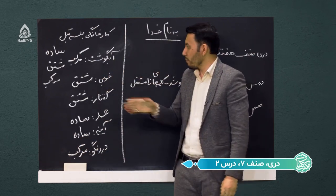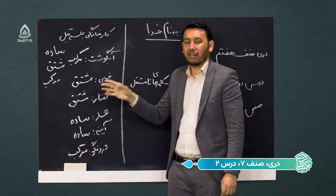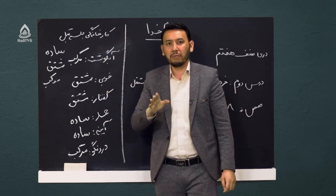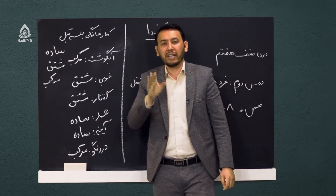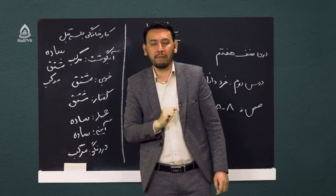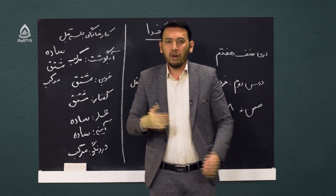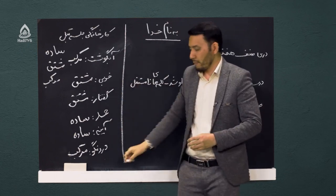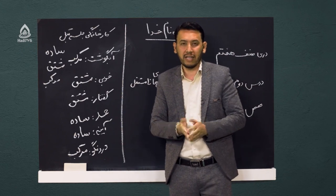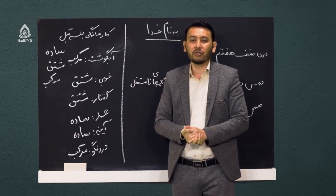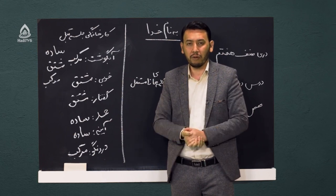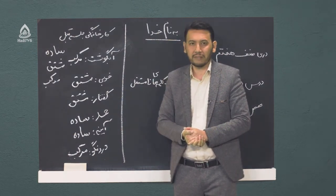پس انواع کلماتی که در کار خانگی جلسه قبل گفتیم در قالب سه نوع کلمه مستقل ساده، مشتق و مرکب برای شما تجزیه کردیم. با این توضیحات وارد بحث خودمان می‌شویم که درس جدید است؛ شعری از شاعر پرآوازه قرن ششم و اوایل قرن هفتم، عطار نیشابوری.